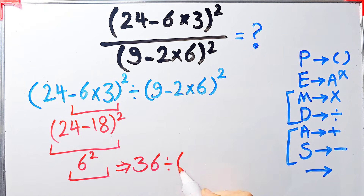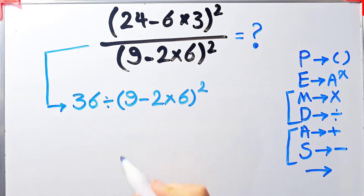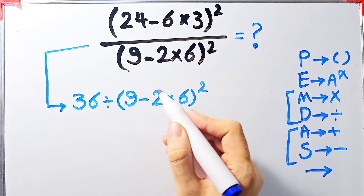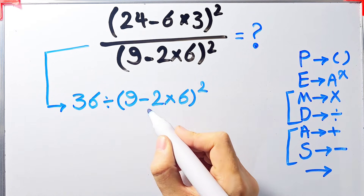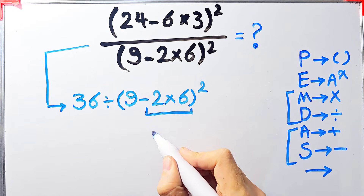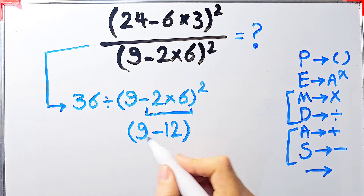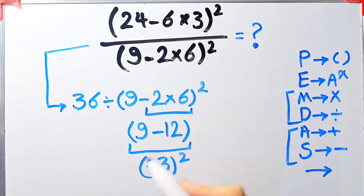The question is now 36 divided by open parenthesis 9 minus 2 times 6 close parenthesis, all to the power of 2. Again we simplify the parenthesis. Inside we have subtraction and multiplication. First we do the multiplication because it has higher priority. Negative 2 times 6 equals negative 12. Now we have 9 minus 12, which equals negative 3.